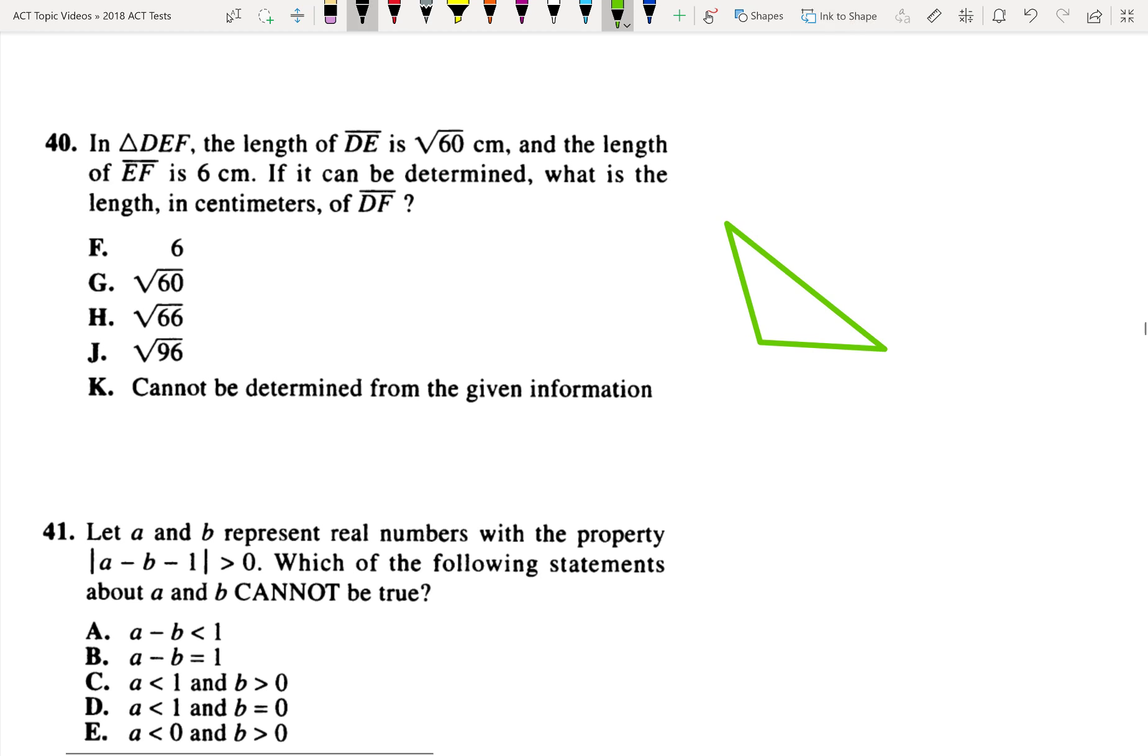So there's my triangle and I'm going to label it, let's say DEF. So this would be square root of 60 and then EF would be 6. And is there any way to find DF?